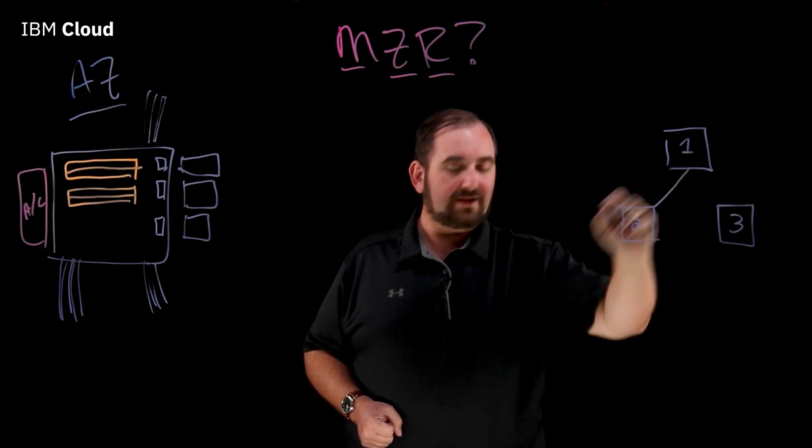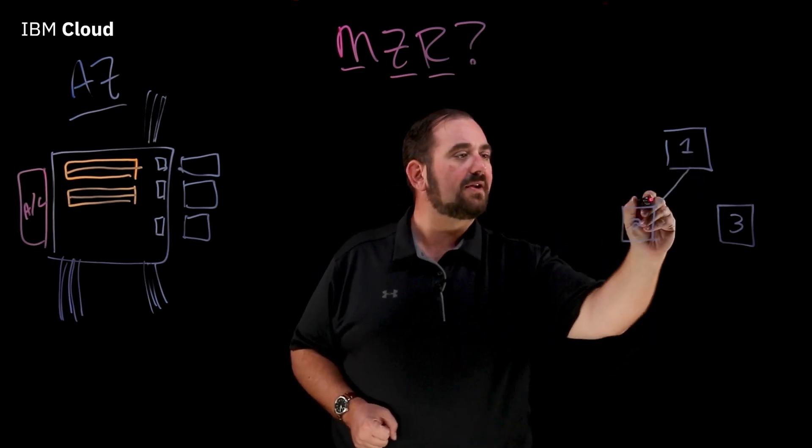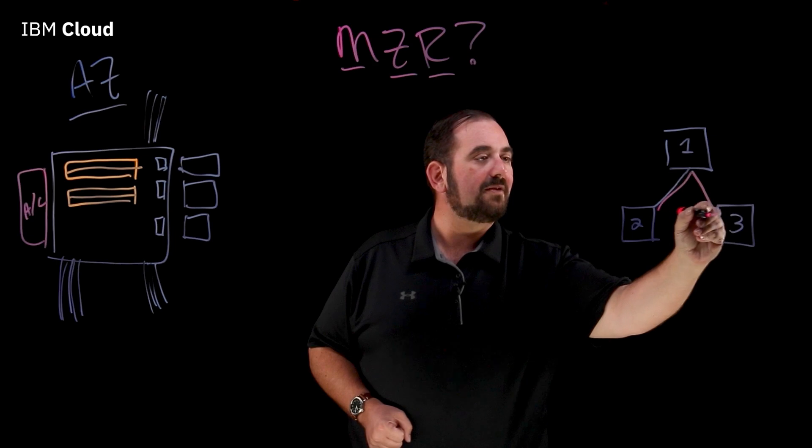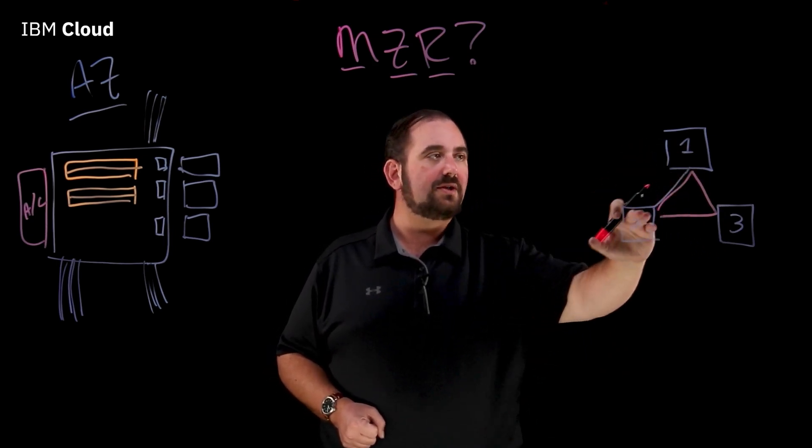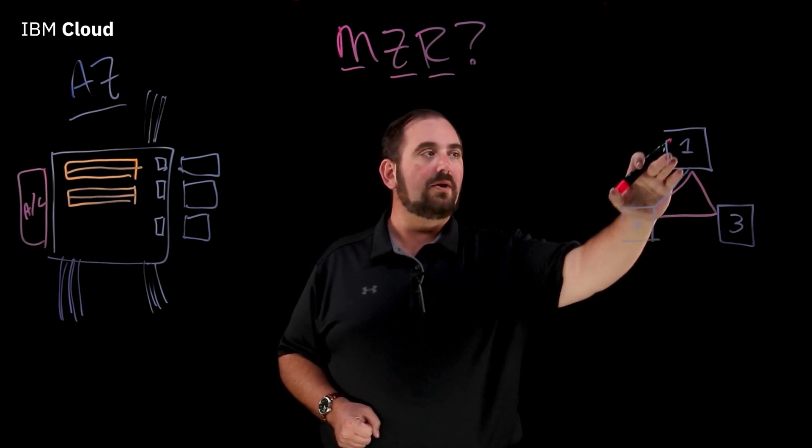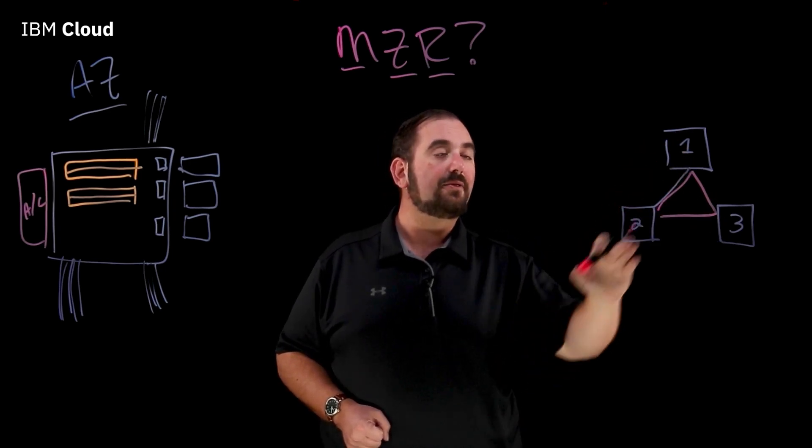So, we've got our three zones. Now, we have to interconnect them all. We're going to interconnect them like this. So, we have all of this interconnection. This guarantees that if you've got a workload that is running in zones one and three, you can keep them in sync.